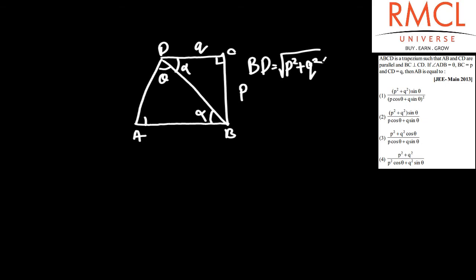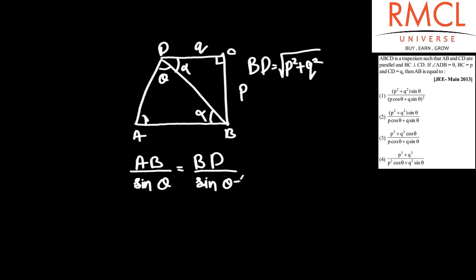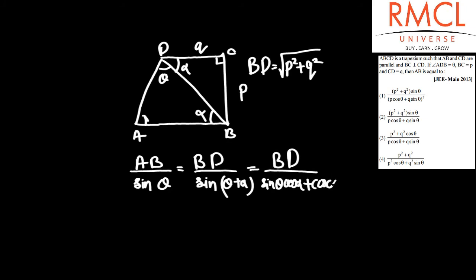In triangle ADB, AB divided by sin theta is equal to BD divided by sin(phi minus theta plus alpha). Expanding this, you get BD divided by sin theta cos alpha plus cos theta sin alpha.